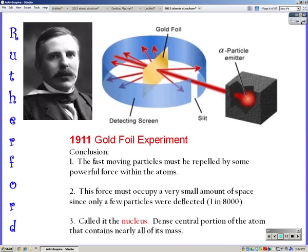Next is Rutherford and the gold foil experiment. Rutherford shot alpha particles at some gold foil. Most of them went straight through, but some of them hit a powerful force within the atoms and bounced straight back. That powerful force must have occupied a very small amount of space because only a small amount of them were deflected, about 1 in 8000. He called this force the nucleus, which is the dense central portion of the atom that contains nearly all its mass.